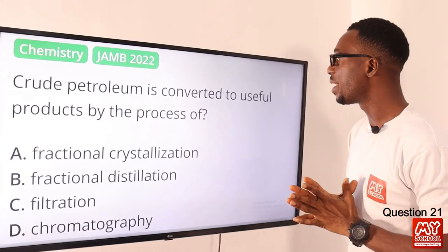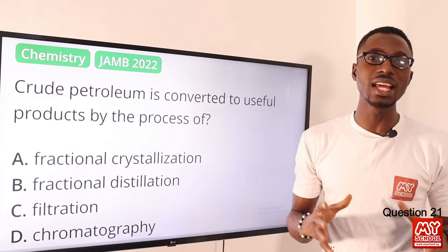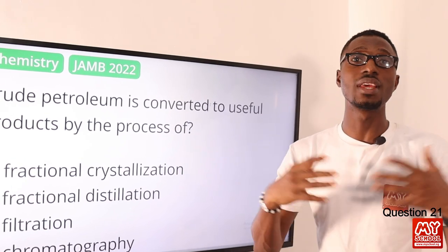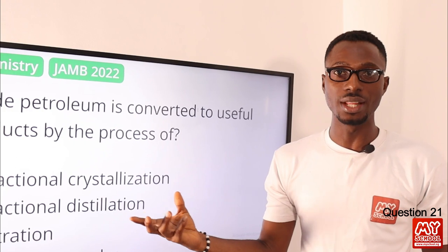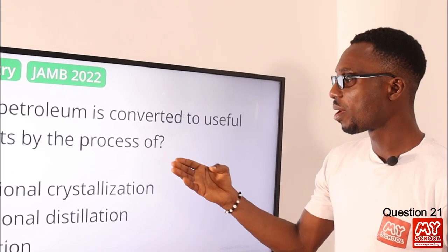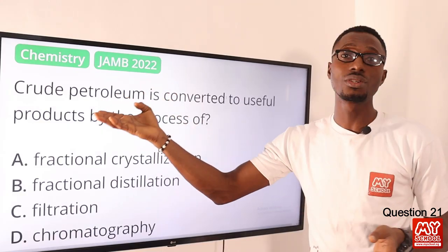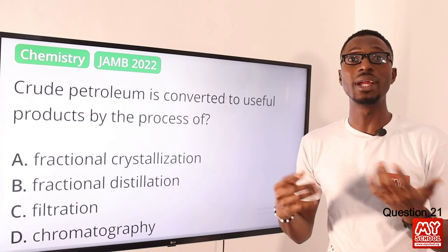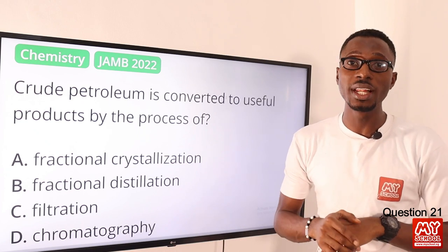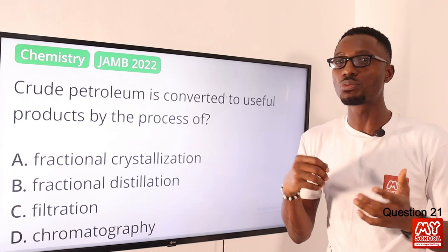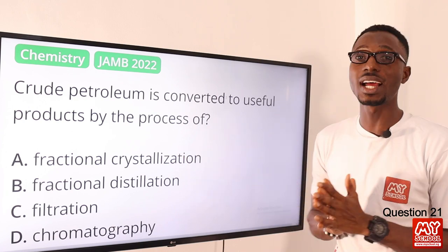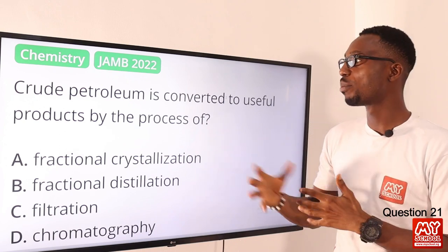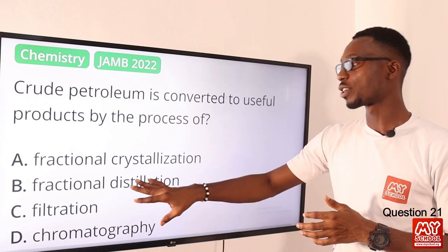Crude petroleum is converted to useful products by the process of fractional distillation. Basically you are trying to separate a particular mixture into its components, or fractions. Crude petroleum, like we have in this question, is actually a mixture — you have your petrol, you have your gas, you have your oil, you have your bitumen and so much more inside. So one process created to extract from it is your fractional distillation.